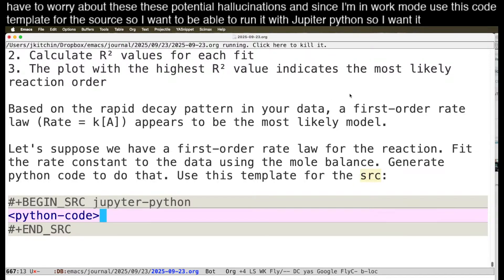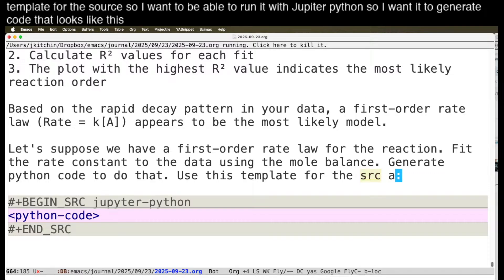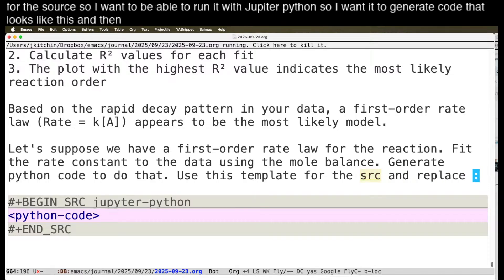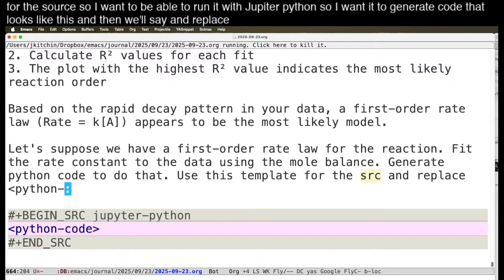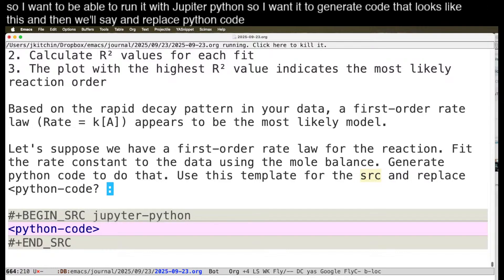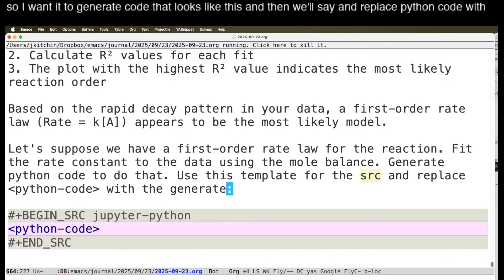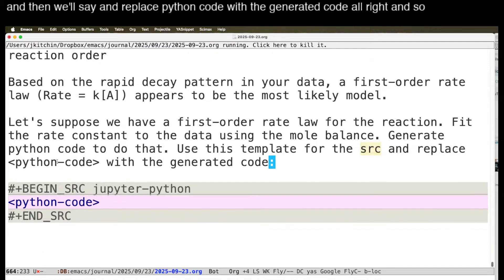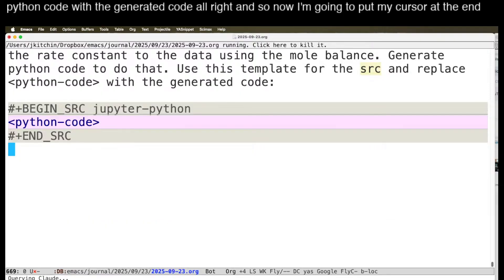So I want to be able to run it with Jupyter Python. So I want it to generate code that looks like this. And then we'll say and replace Python code with the generated code. Alright, and so now I'm going to put my cursor at the end and send that. So that will just send the things I just typed.